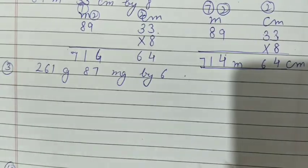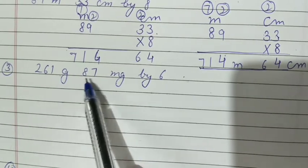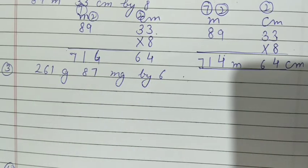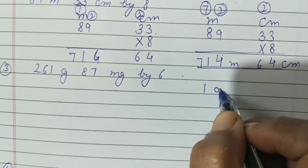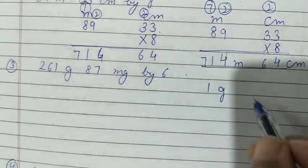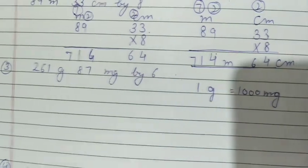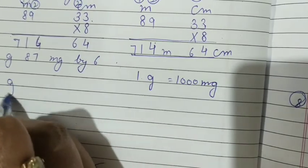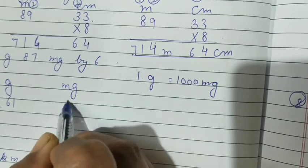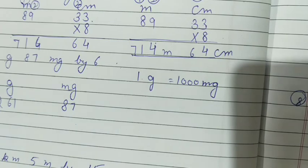Now question 2 is simple. Question 3, 261 gram 87 milligram by 6. We have to multiply this number by 6. You know in 1 gram, how many milligrams? In 1 gram there are 1000 milligrams, so there should be 3 digits. But in this question we have given only 87.